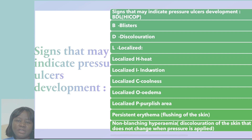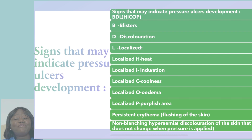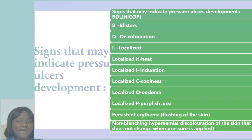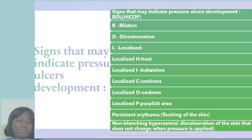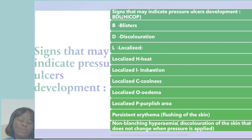D stands for discoloration. L stands for localized heat. Then we have induration, coolness, edema, and purplish area. If you want to add the two extra ones — we have persistent erythema or flushing of the skin, and non-blanching hyperemia — seven points and you are fine.